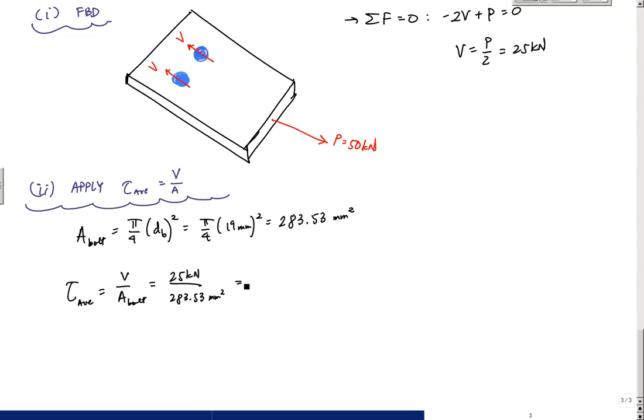And this is going to be 0.0882 kN per millimeter squared. And just a matter of units, 1 kN per millimeter squared is equal to 1 GPa, so that is the same as 0.0882 GPa.